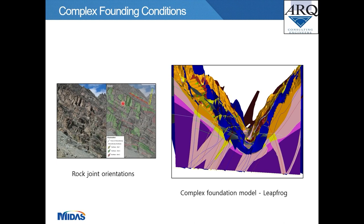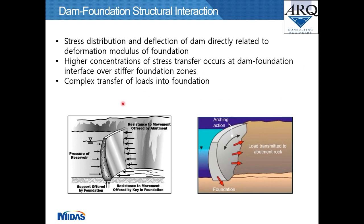A photograph shows an overlay of typical rock joint orientations for the site. An image from the Leapfrog model shows the full extent of the layered foundation model, with various colors representing the different rock layers with different material parameters, and indicates some of the rock jointing in the foundation.